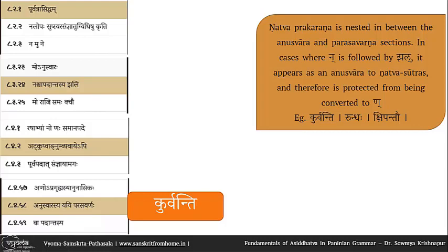In the Ashtadhyayi they are kept separate because there are other operations happening in between. The natva prakarana is nested between the anuswara and parasavarana sutras so that the nakara is temporarily made invisible to the natva sutras. In all cases where nakara is followed by jhal, it appears as anuswara to the natva sutras and is therefore protected from being converted to nakara.